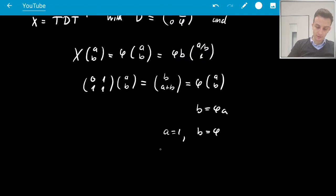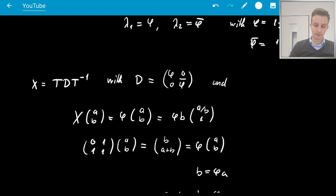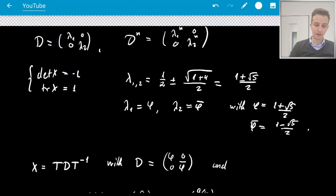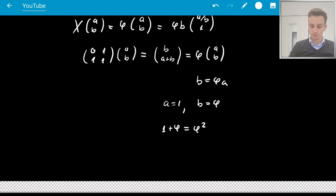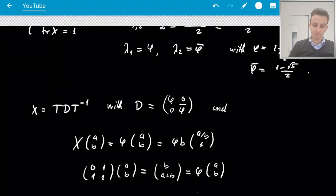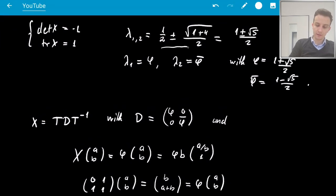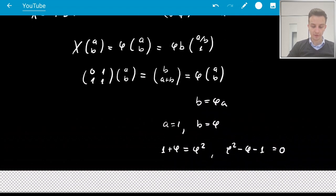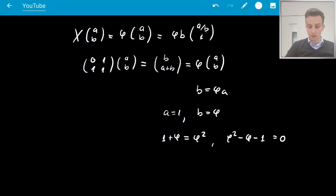Does that work? Do we then have a plus b equals phi b? So we would have 1 plus phi equals phi squared. Indeed, this is true because that's exactly the equation we got it from. You can verify this, of course, by phi squared minus phi minus 1 equals 0. You'll see that it's exactly this that you get from the quadratic formula. Okay, so that's good.